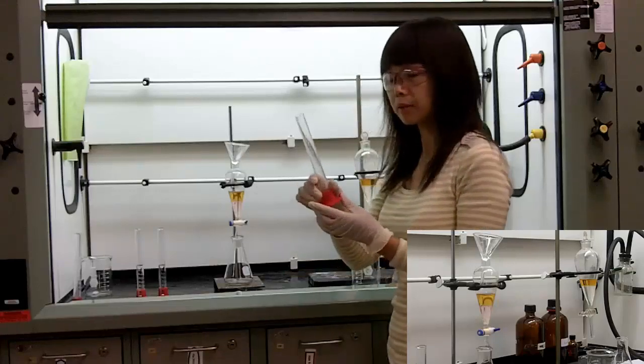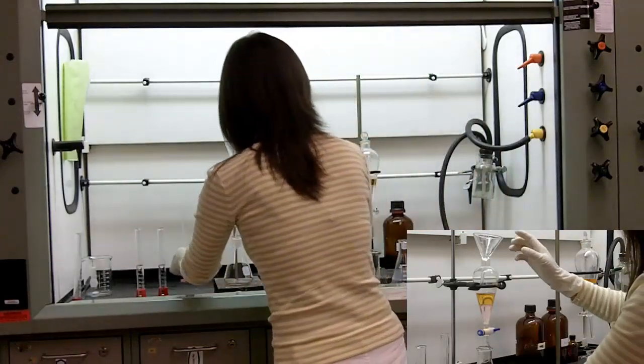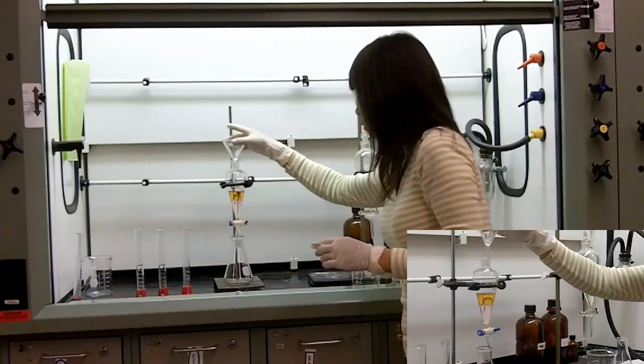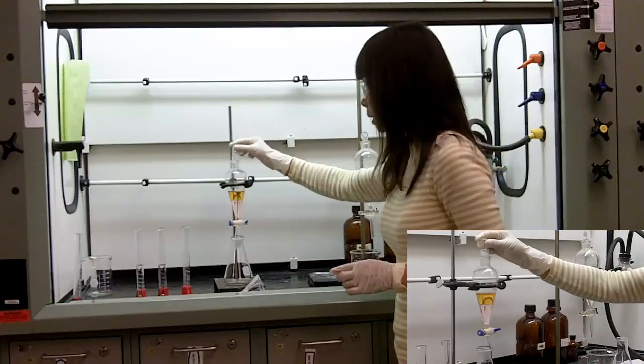Now you pour the rest of the methylene chloride into the funnel, remove the glass funnel from the top, and put the stopper on your separatory funnel.